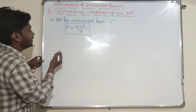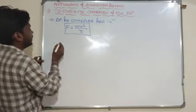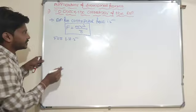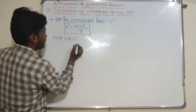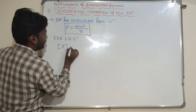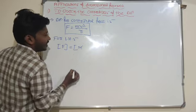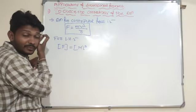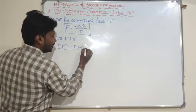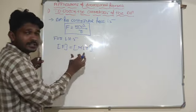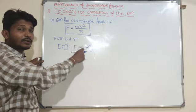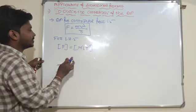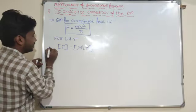For the right hand side: mass is M, velocity squared gives L1 T to the power of minus 1 squared, divided by radius which is L. Simplifying: M1, L square T to the power of minus 2 in numerator, and L1 in denominator. Taking L to numerator gives L to the power of minus 1. So finally M1, L to the power of 2 minus 1 equals L1, T to the power of minus 2.